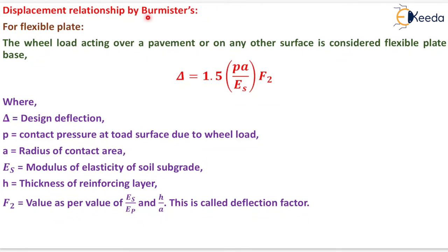Now displacement relationship by Burmister. For flexible plate the wheel load acting over a pavement or any other surface is considered flexible plate base. Now delta will be equals to 1.5 Pa upon Es into Fz where delta equals design deflection, P equals contact pressure at road surface due to wheel load, a equals radius of contact area, Es is the modulus of elasticity of soil subgrade, H is the thickness of reinforcing layer. Fz equals value as per value of Es upon Ep and H by a. This is called deflection factor.